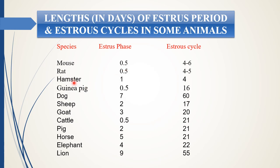In hamster, the estrus phase is 1 day and the estrus cycle is only 4 days. In lion, the estrus phase — the heat phase — is 9 days, which is quite long, and the total cycle length is 55 days — even more than the menstrual cycle, as I have already discussed when talking about the differences between the two cycles.